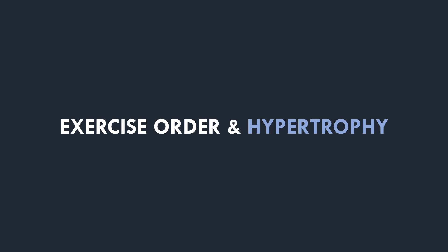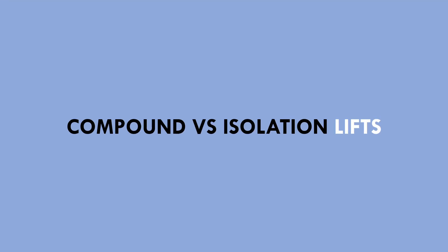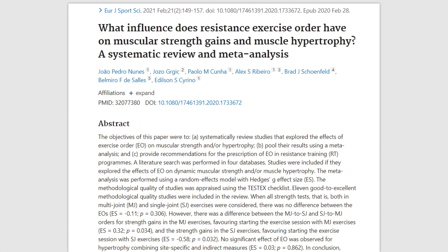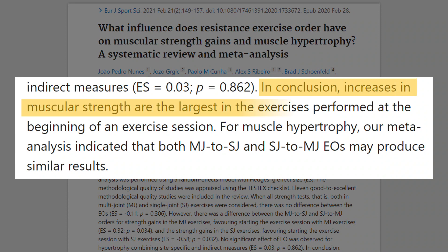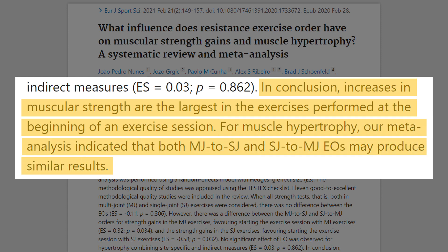Let's now explore what the research says about the influence of exercise order on muscle hypertrophy. The first consideration is the sequence of compound versus isolation lifts. It is commonly advised that compound lifts should be performed first in a session and isolation lifts last. The best evidence we have is a meta-analysis comparing different orders of compound and isolation lifts. The researchers found that gains in maximal strength were superior for exercises performed first, regardless of whether it was a compound or isolation lift. However, hypertrophy outcomes were similar regardless of which type was performed first.